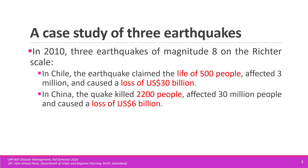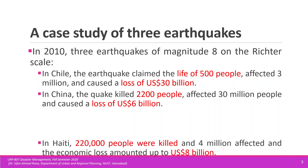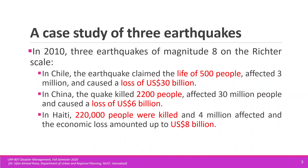In China, with the same magnitude, around 2,200 people were killed, around 30 million more were affected, and it caused a loss of around 6 billion dollars. A third earthquake happened in Haiti, which is considered one of the worst disasters ever seen in recent human history. Around 220,000 people were killed, 4 million affected, and losses of 8 billion US dollars were observed.